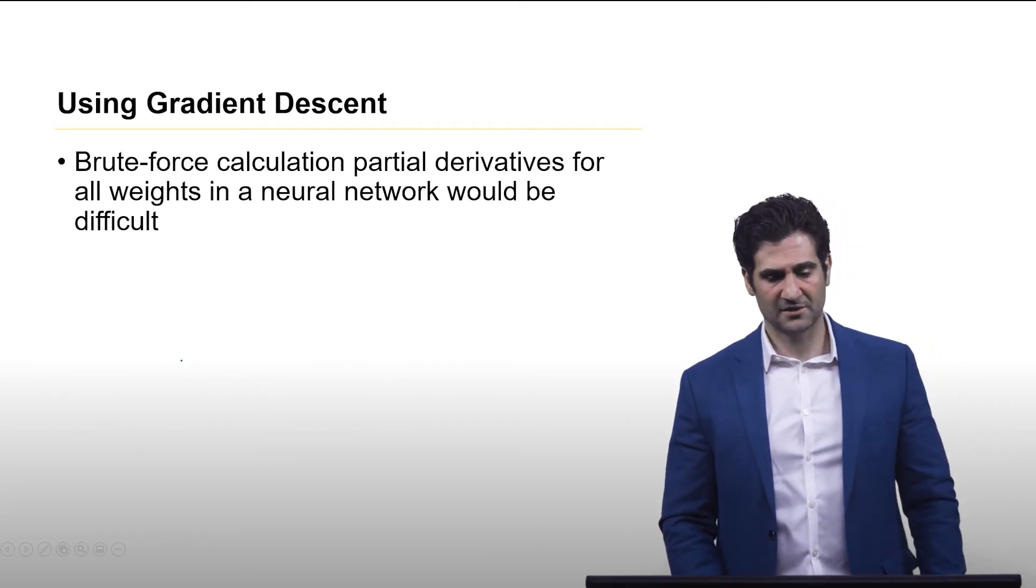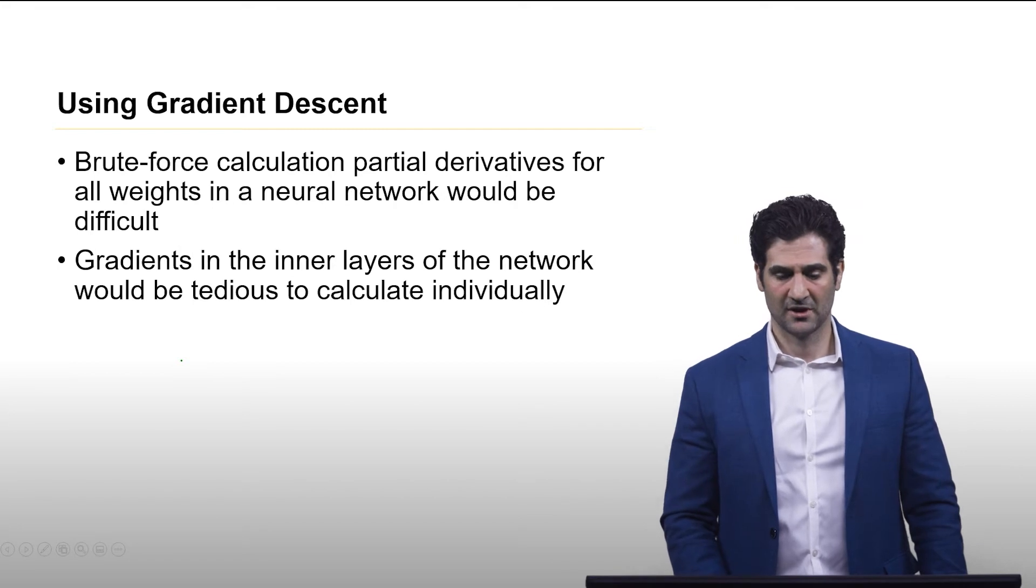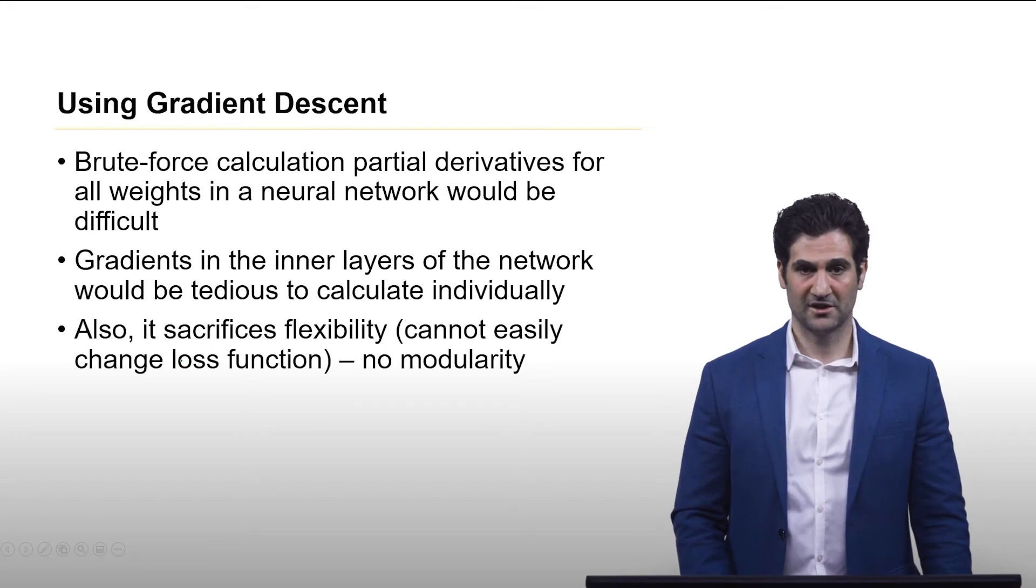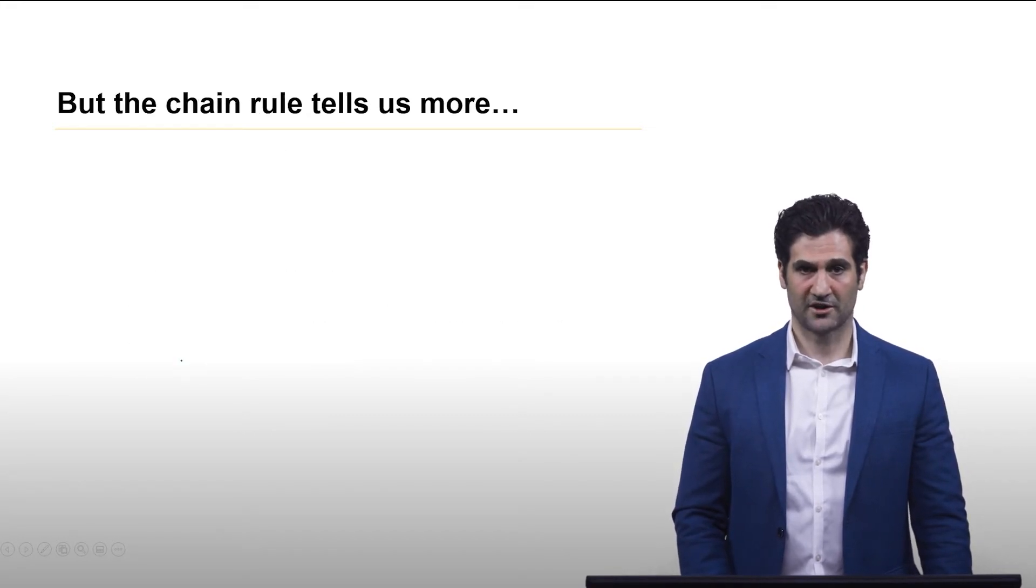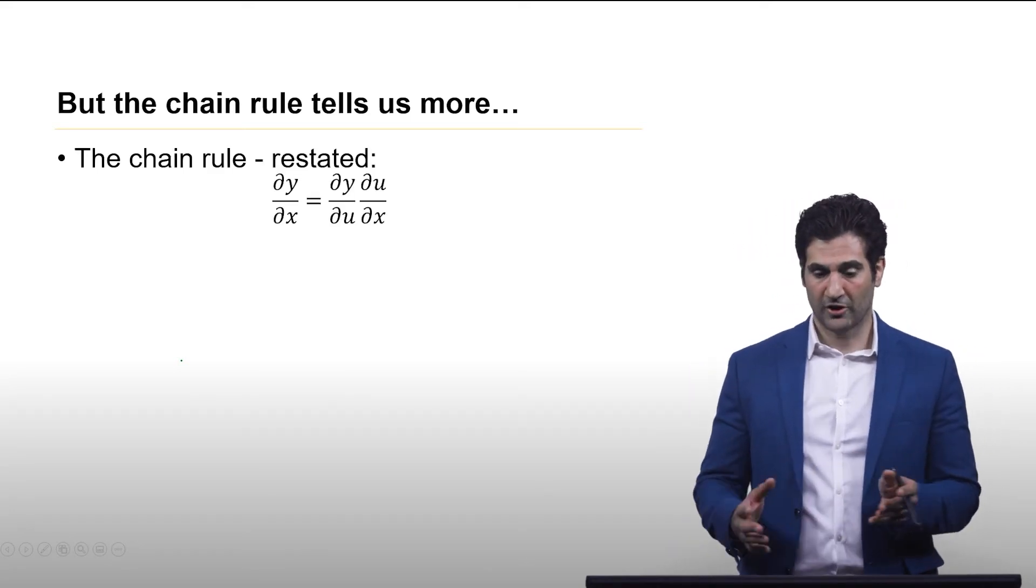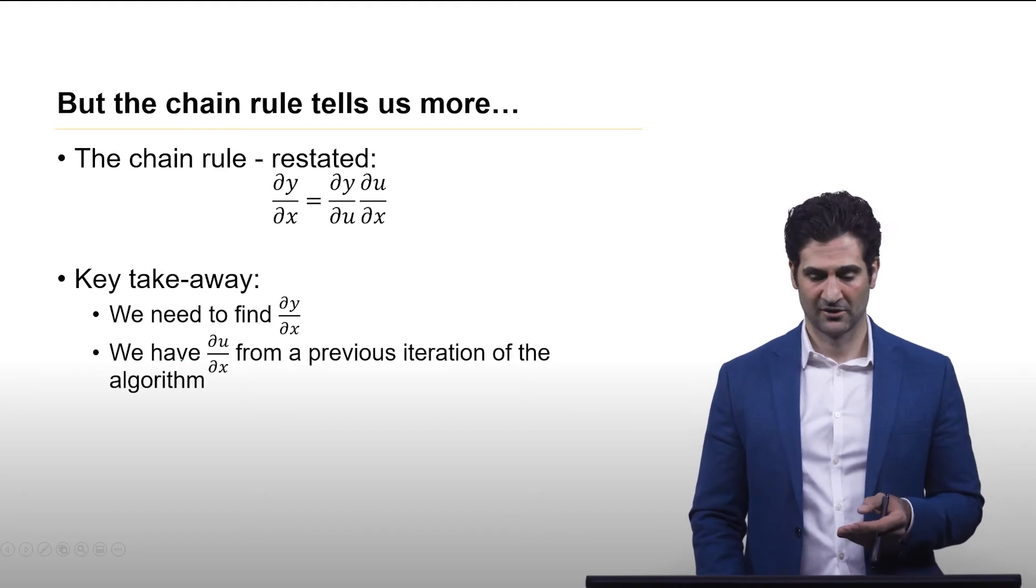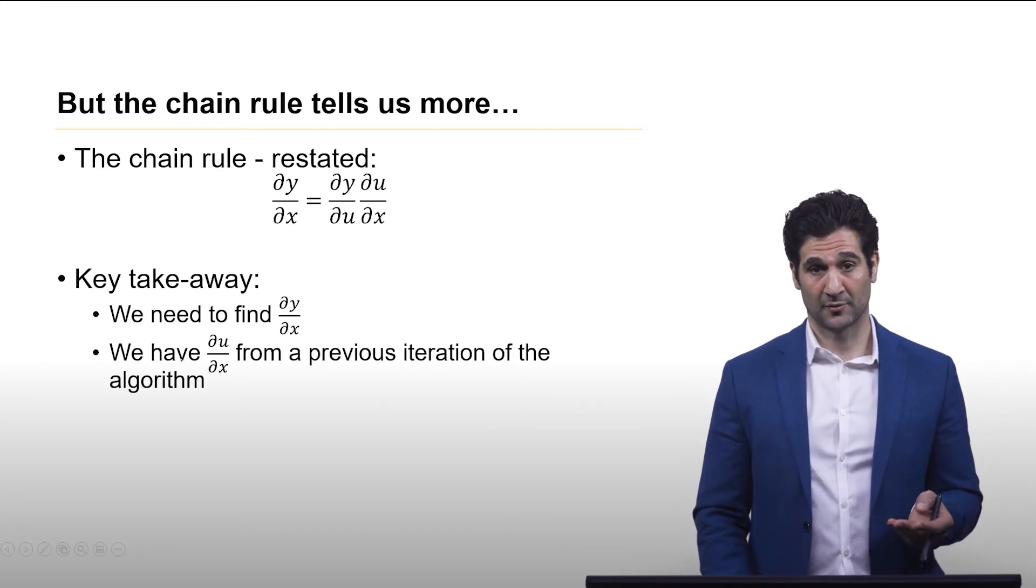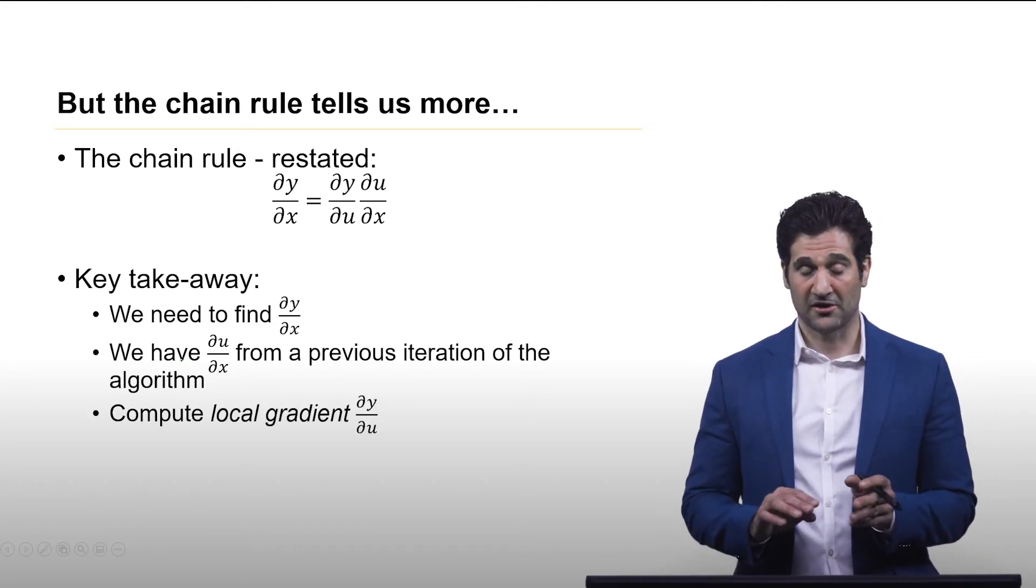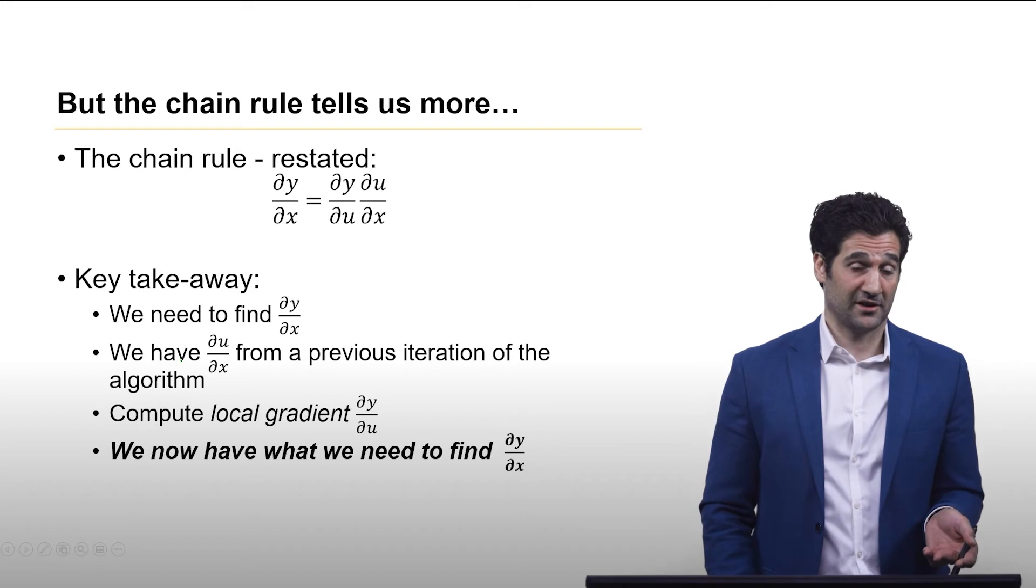So, okay, like I keep saying that the brute force calculation of the partial derivatives just would be really challenging. And so doing all those gradients at the inner layers would be very tedious. And as I just said, more flexible if you can avoid that. But the chain rule tells us a bit more. If you look at it restated in this way, we can see that a key thing is if we need to find dy dx, and maybe we know du dx from a previous iteration of the algorithm, we might be able to compute this other thing called a local gradient, du dy. If we can do all that, then we have everything we need to find that partial derivative.